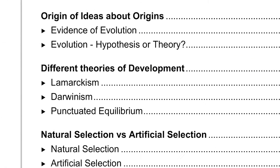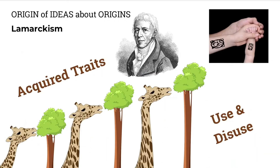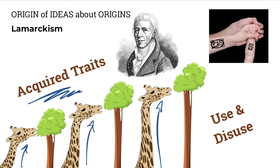Then we're going to have a look at different theories of development. We'll look at different scientists and their theories, like Lamarck, Darwin, and Gould and Aldridge in their theory of punctuated equilibrium. Lamarck talked about the desire or the need to develop certain structures or changes. So if a giraffe had to stretch its neck to reach food sources higher up in the trees, these acquired characteristics during its lifetime — like elongated necks — are transferred to offspring. So if you have a tattoo, you could pass it on to your offspring.